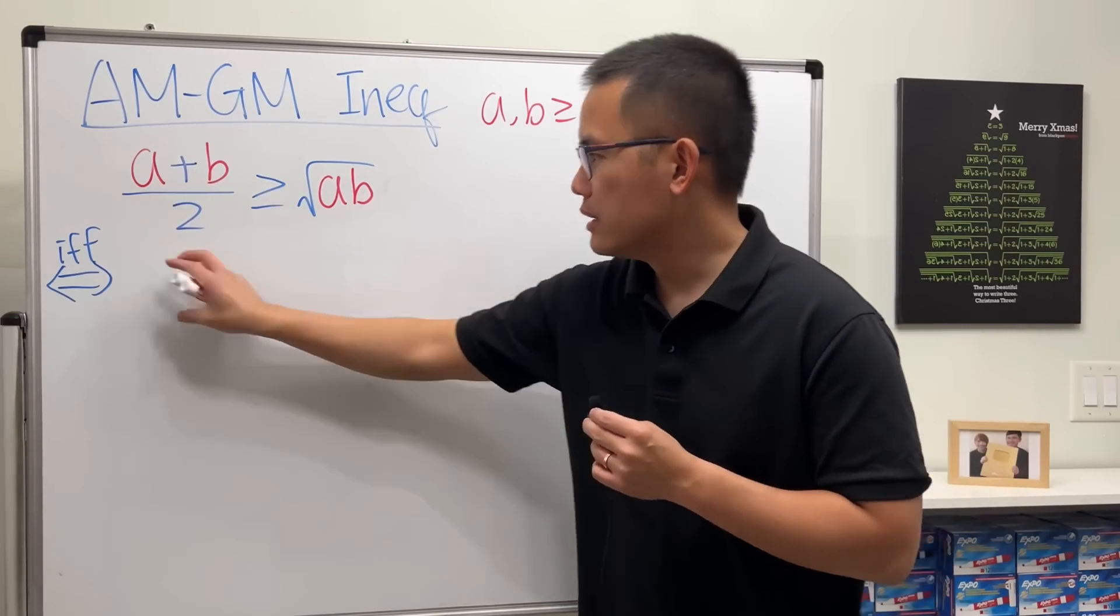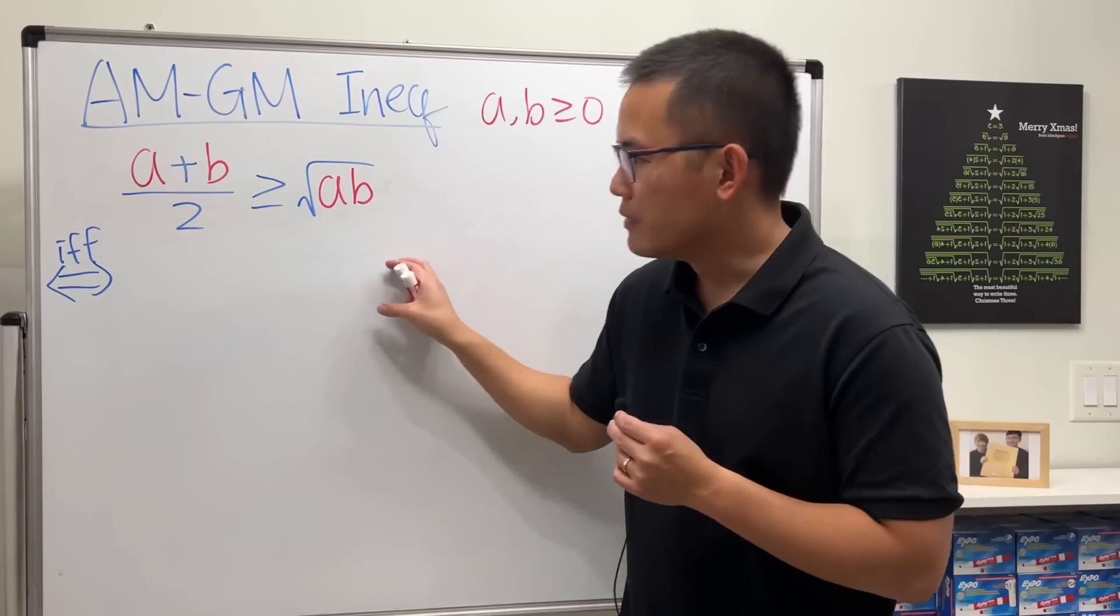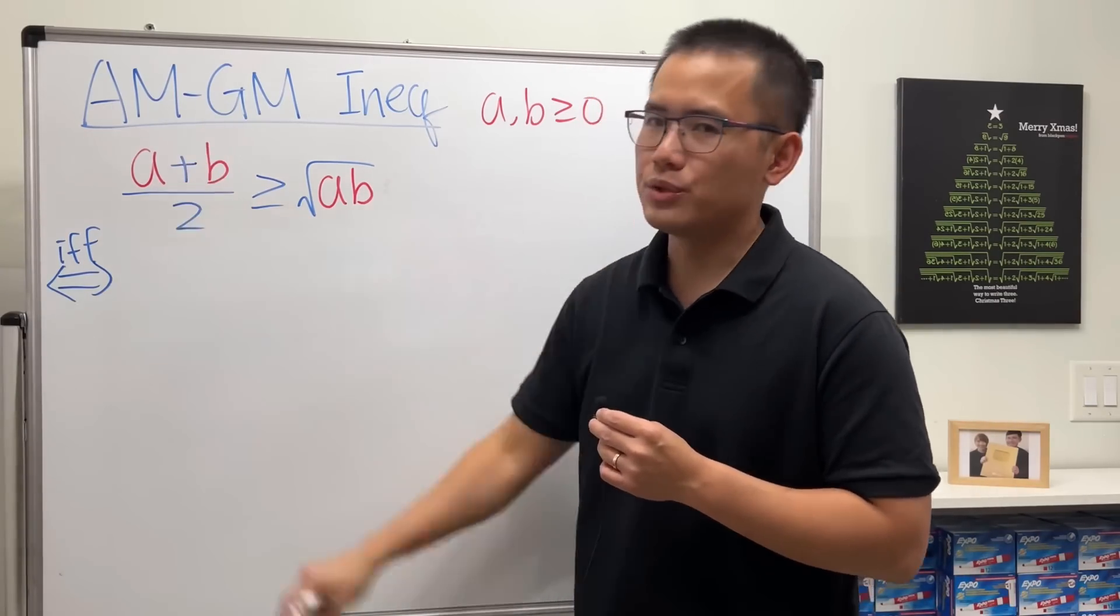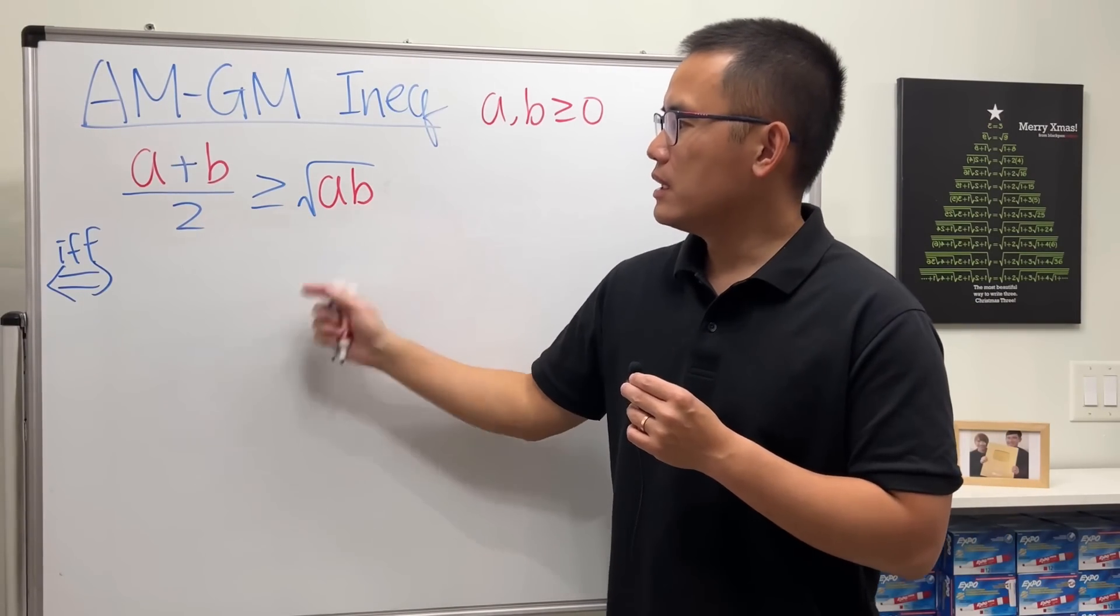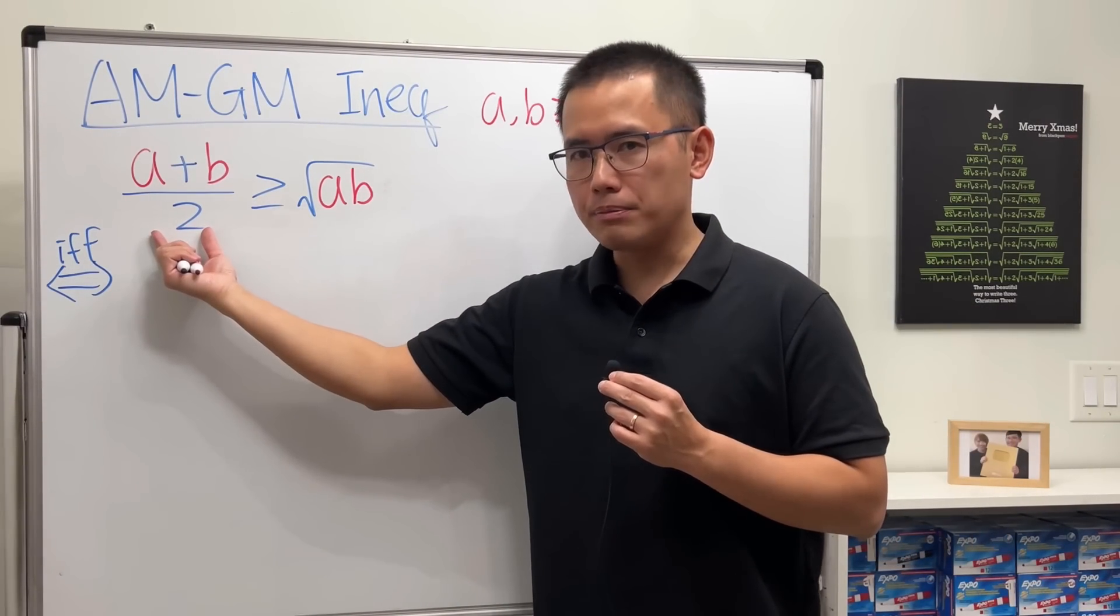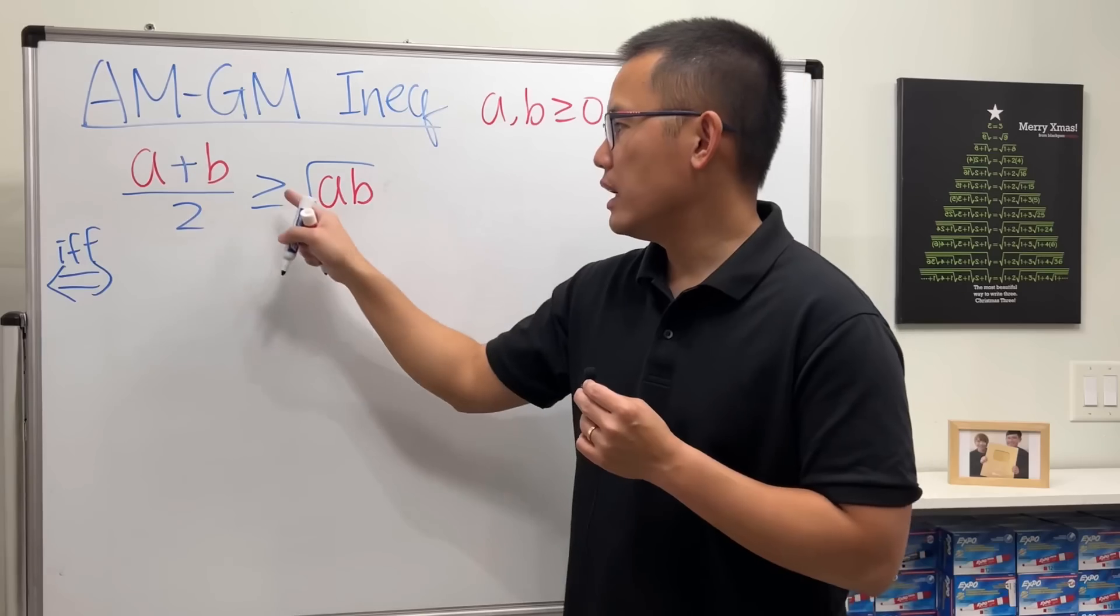Yeah, so we start with this. First, let's multiply the positive 2 to both sides and we can still maintain the inequality. So we have a plus b is greater than or equal to 2 times square root of ab.